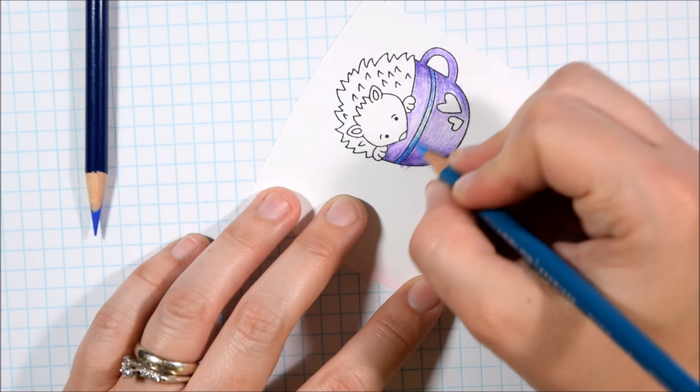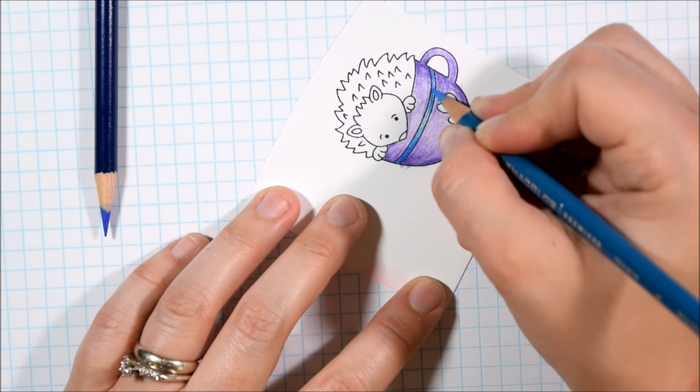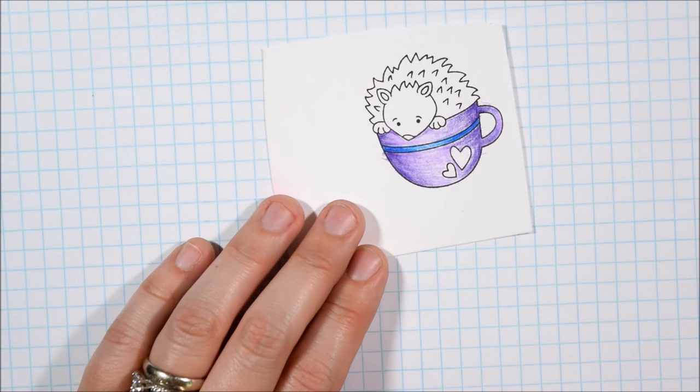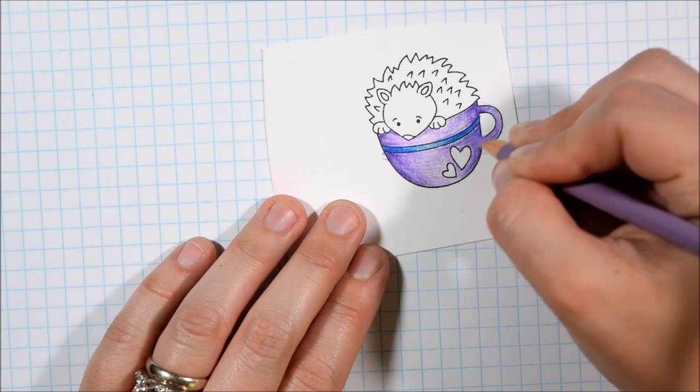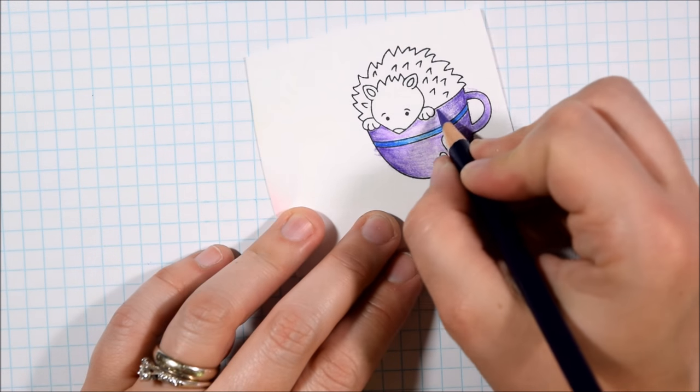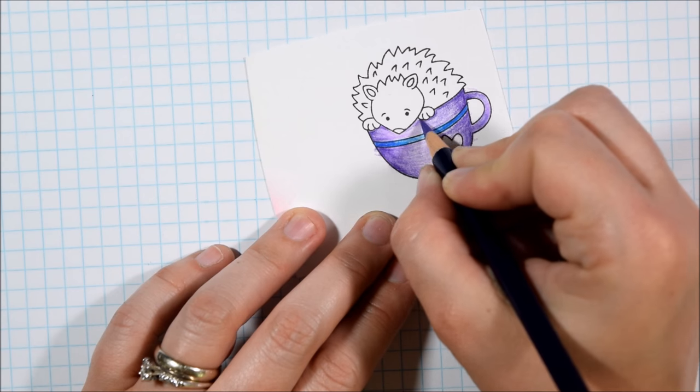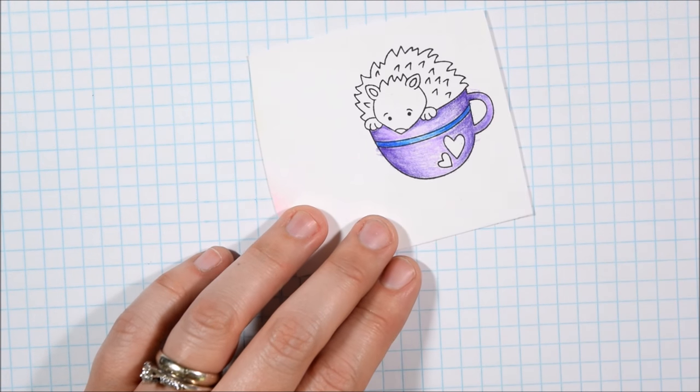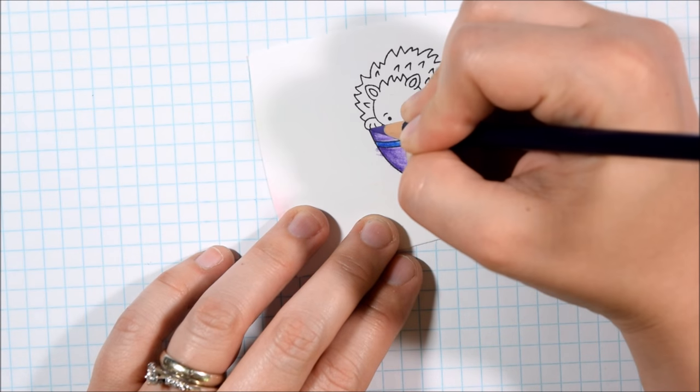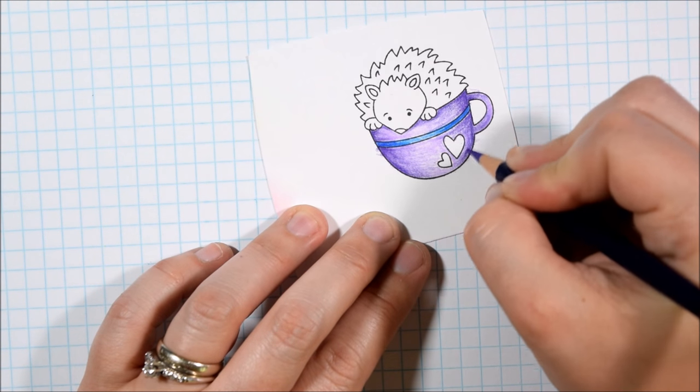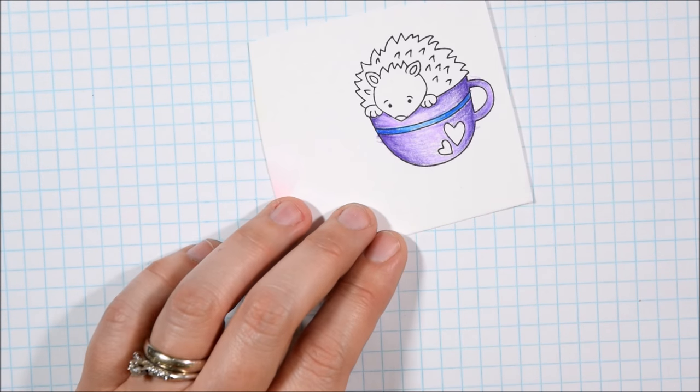Here I want the cup to have a rounded effect, so the easiest way to do that is to add a little bit of darker on the left and right side to create a highlight down the center. This is not going to be part of a scene, so I'm not going to worry about a specific light source. I'm just going to add some interest. With the hedgehog, I'm going to add the drop shadow behind his head.